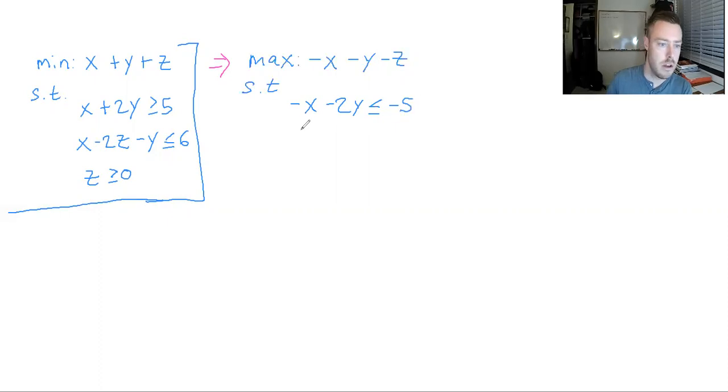So such that we're going to multiply that equation by negative one, so you have negative x minus 2y is less than or equal to minus 5. The third constraint, x minus 2z minus y is less than or equal to 6, is perfect as it is, so we're going to have x minus 2z minus y is less than or equal to 6.